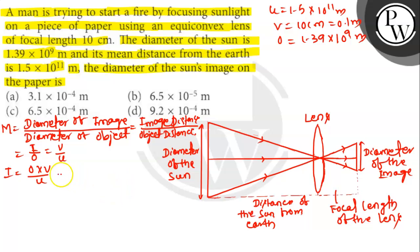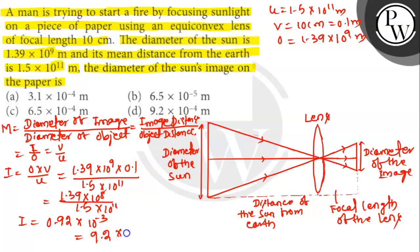Substituting values in the above equation we get 1.39 × 10^9 × 0.1 divided by 1.5 × 10^11. So that will be 1.39 × 10^8 divided by 1.5 × 10^11. So I equals 0.92 × 10^-3. Thus the diameter of sun's image on paper is 9.2 × 10^-4 meters. Option D is the correct answer. Thank you.